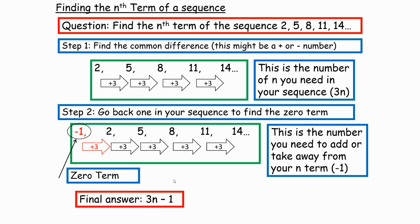This is fairly straightforward once you get the grips with it, but there can be some difficulty understanding it at first. So I'm going to go over it one more time. You're asked to find the nth term of the sequence. The first thing you do is find out what's going on — it's going up in threes, plus 3, plus 3, plus 3. So 3n is part of our answer. Then go back one in the sequence, taking away 3, and you end up with minus 1. So 3n minus 1 is the answer.